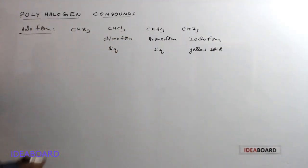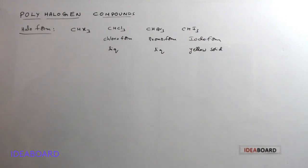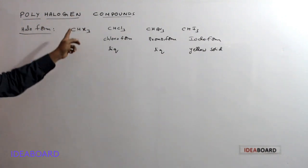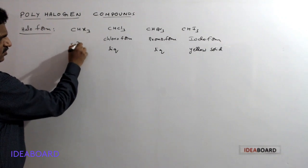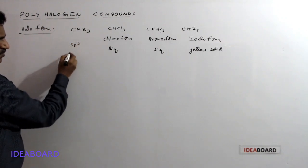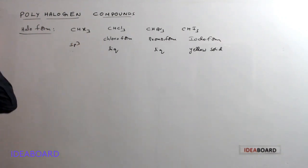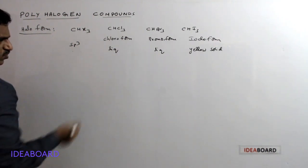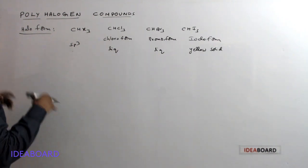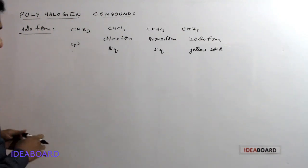The hybridization of the central carbon atom in haloforms is sp3. It looks tetrahedral but with little distortion in the tetrahedral structure. This is a polar compound and its net dipole moment is not equal to zero.